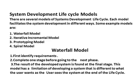There are several models of the System Development Life Cycle. Each model facilitates system development in different ways. Some example models are: waterfall model, iterative incremental model, prototyping model, and spiral model. In the waterfall model, requirements are identified first, one stage is completed before going to the next phase, and the result of the developed system is found at the final stage.